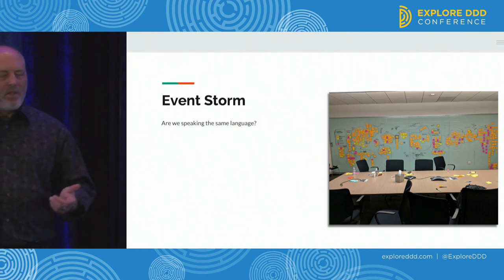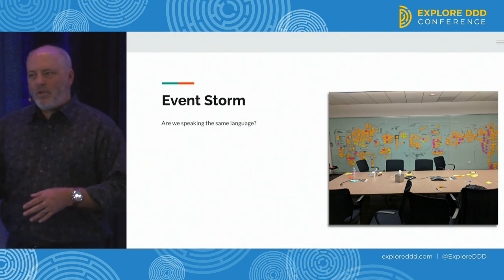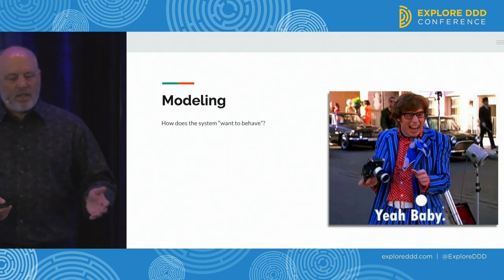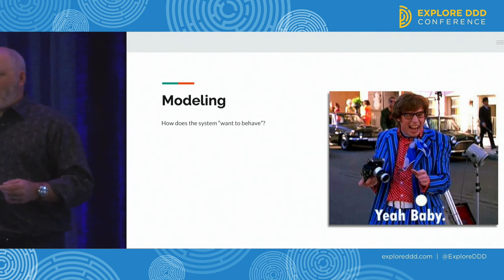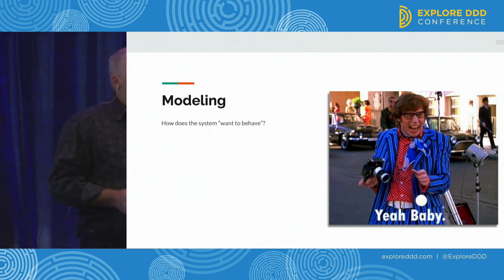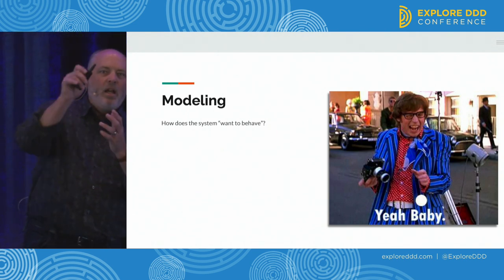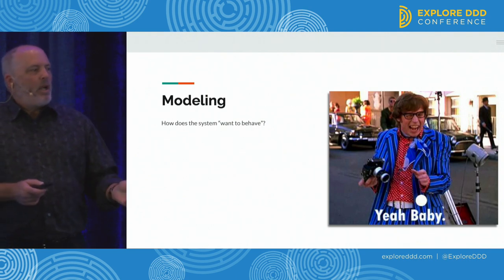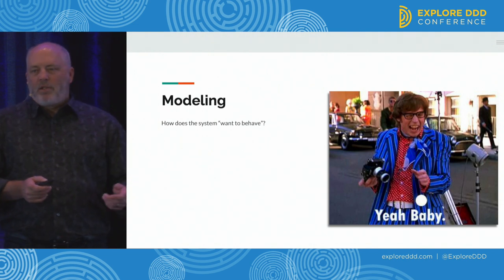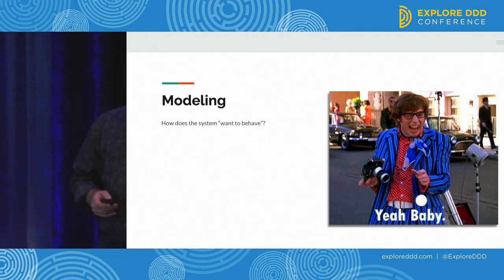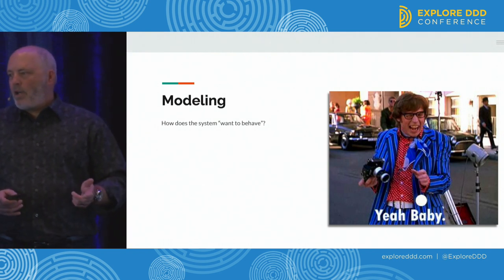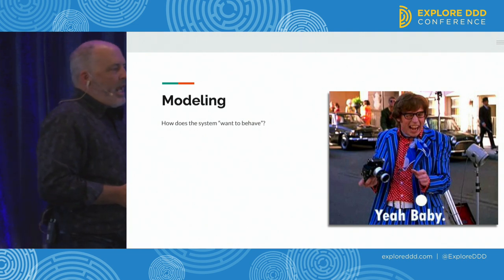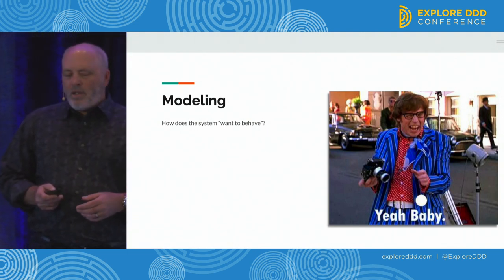We had the business and technical folks speaking the same language. Now what? We need to start writing code — but first we need to model. The communication was still hard. I could say 'this capability is going to talk here,' and we could do context mapping, but it wasn't quite doing the work. The way I was thinking about it: I don't want to tell you how to build your system — I want the system to identify how it wants to behave. That was the flip of the mindset.